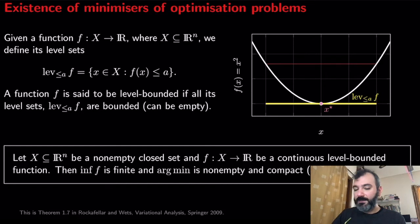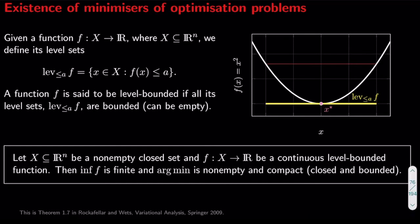There is this very useful result that states: if x is a non-empty closed set of vectors and f is a cost function which is continuous and level bounded, then the infimum is finite and the argmin — the set of minimizers — is non-empty. A non-empty set of minimizers means that we have at least one minimizer. The set of minimizers is also compact, meaning closed and bounded. The important thing is that it is non-empty — we have a minimizer.